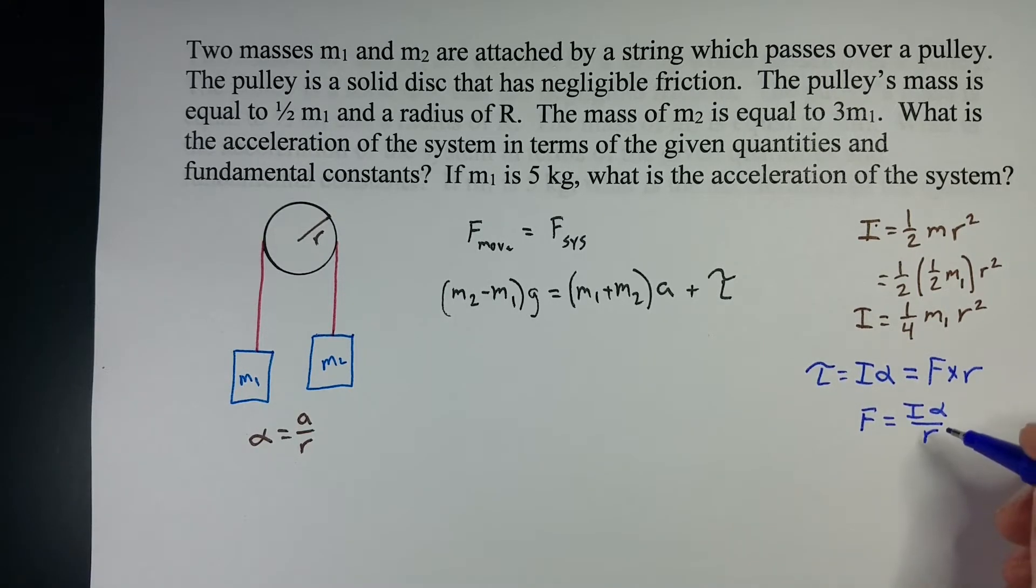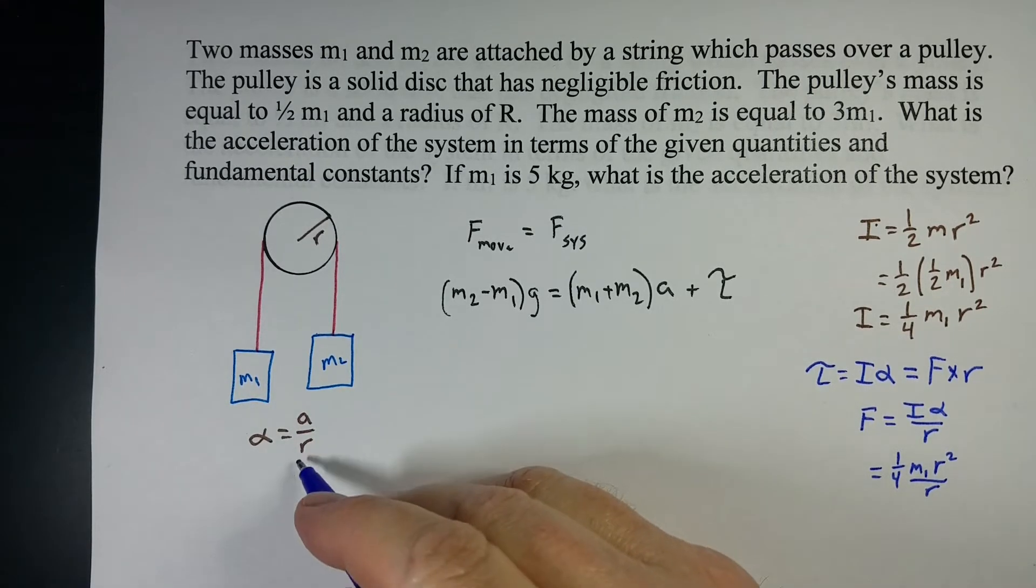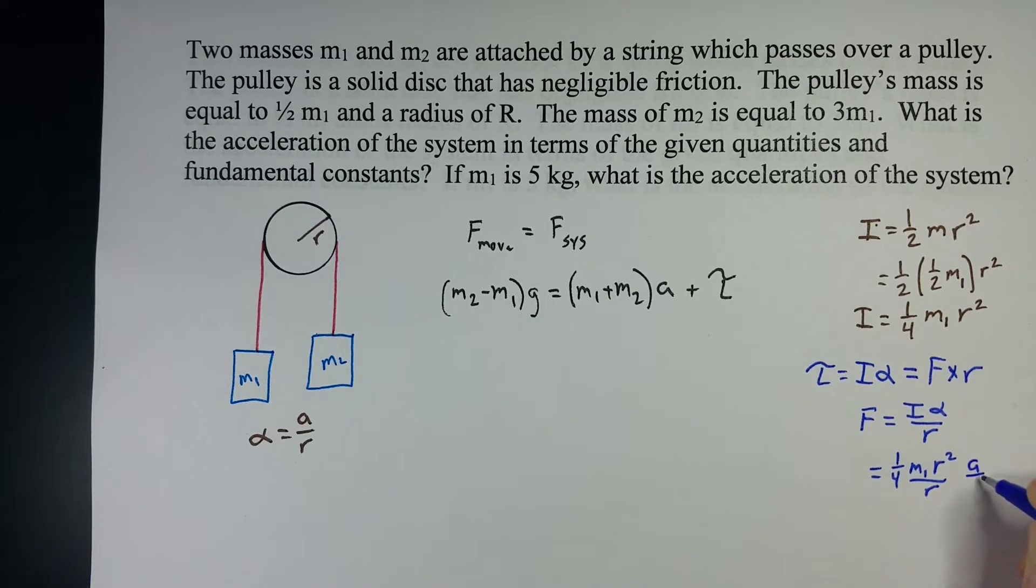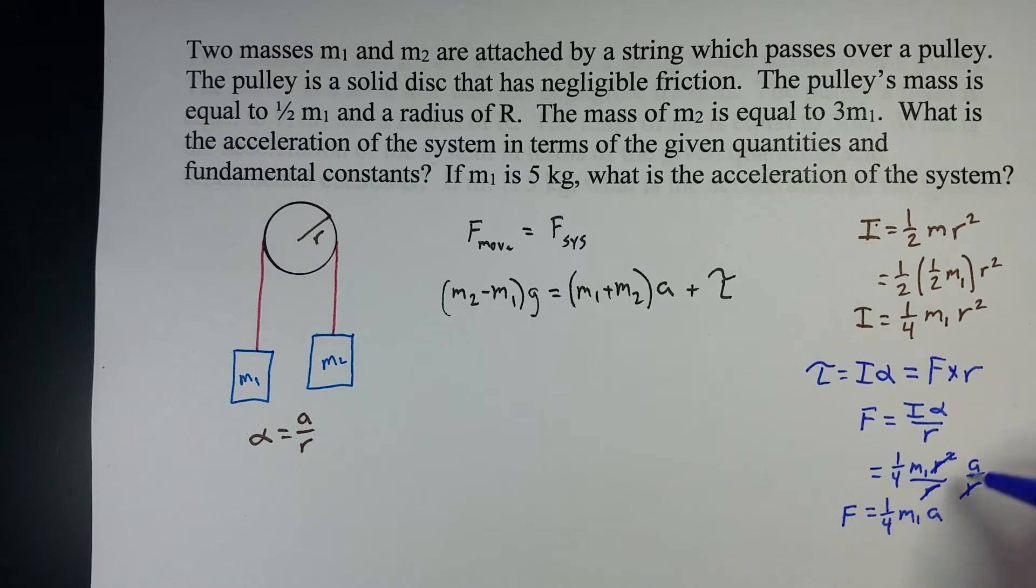We already know what I is: one-fourth M1 R squared. Then we're dividing by R, and alpha is A over R. We've got two radii at the top, two radii at the bottom, so these cancel out. We get that the force is equal to one-fourth M1 A. So we're going to use that and substitute it in here for the torque.